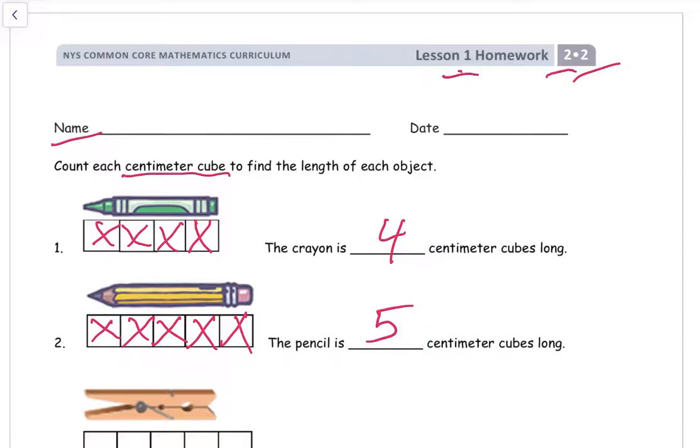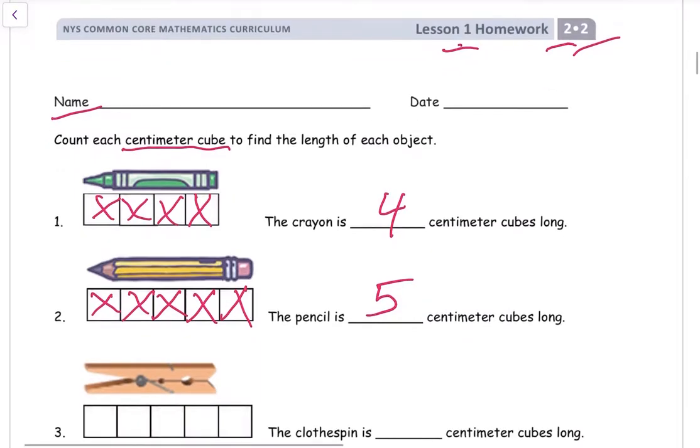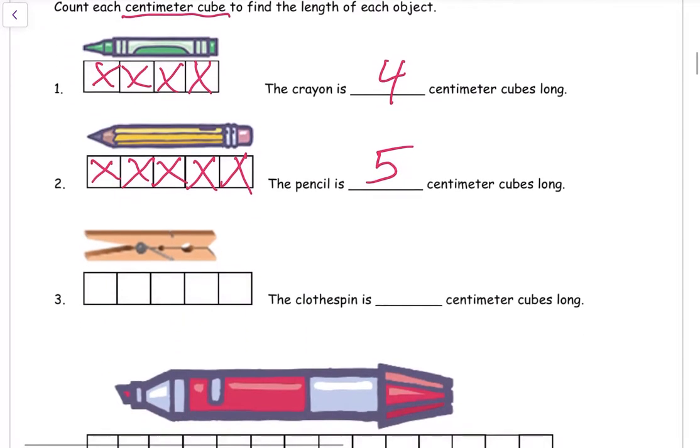So far all of the pictures we've just been crossing off all of the cubes but that's not always going to work. Here you notice that there's an extra cube that's sticking out because the clothespin only goes about that far.